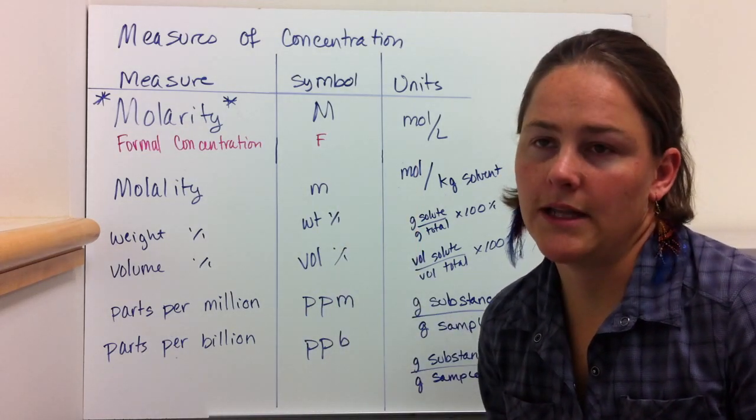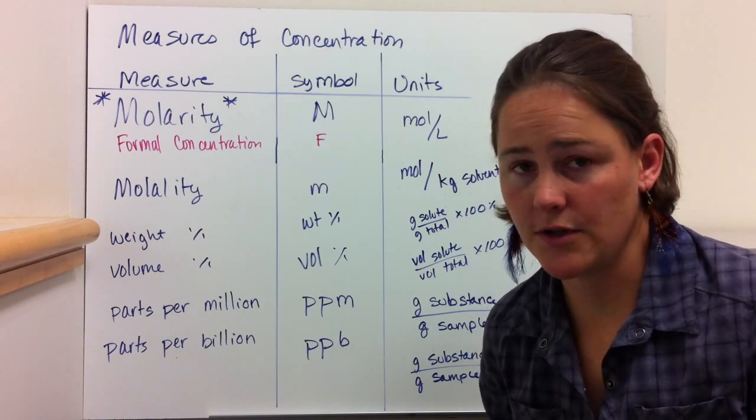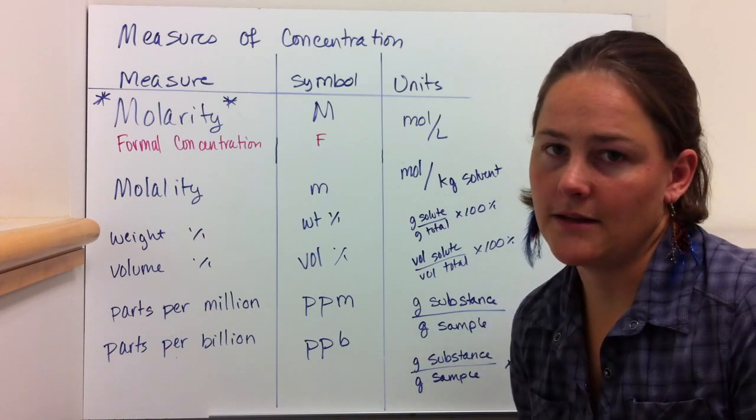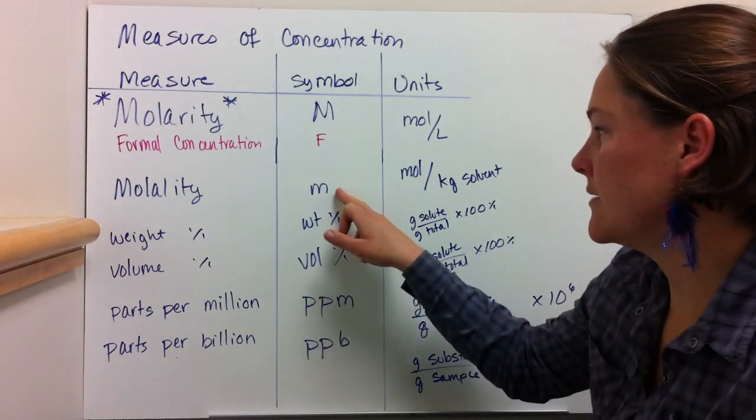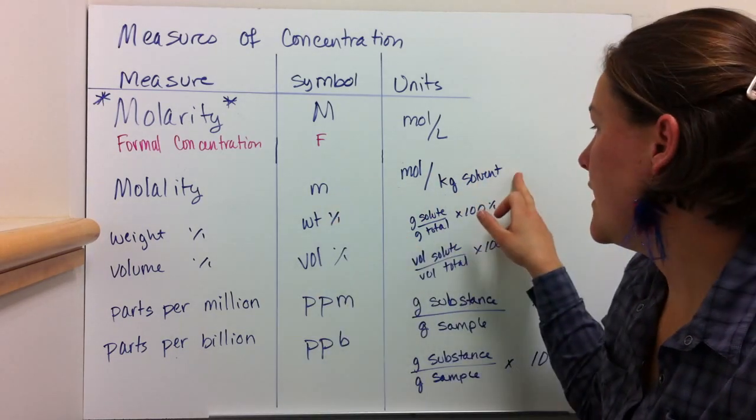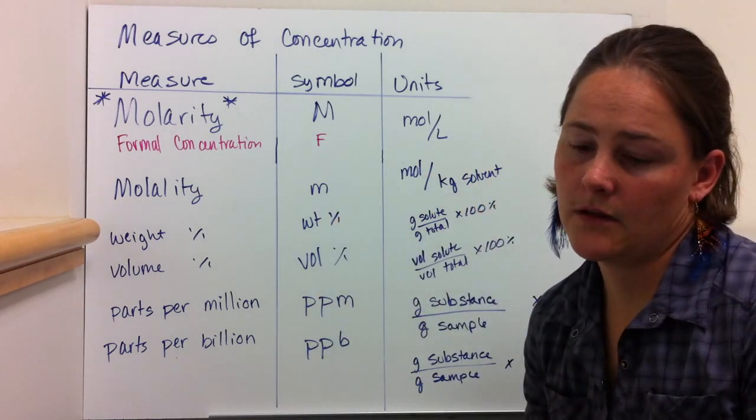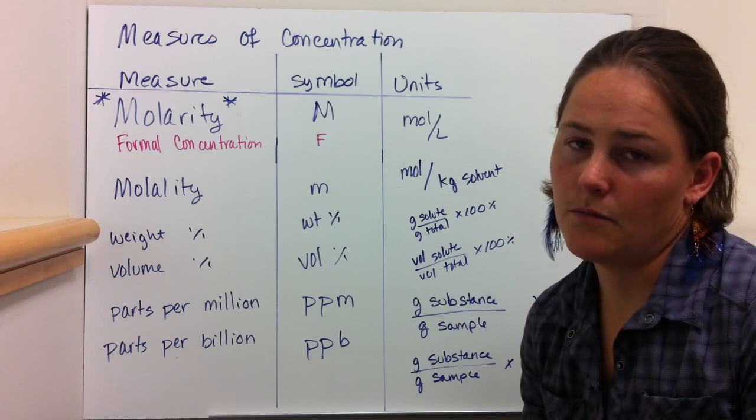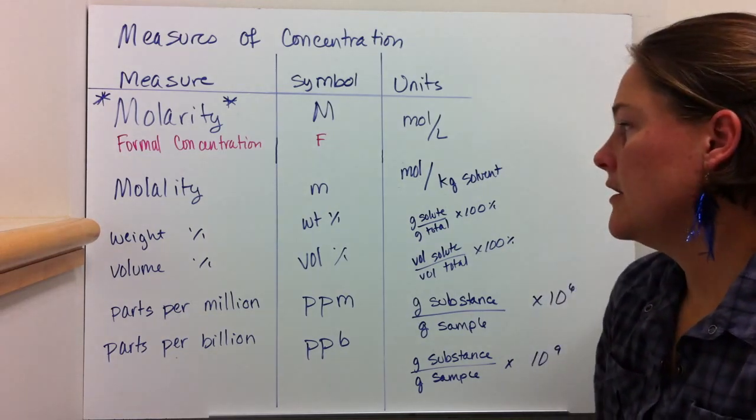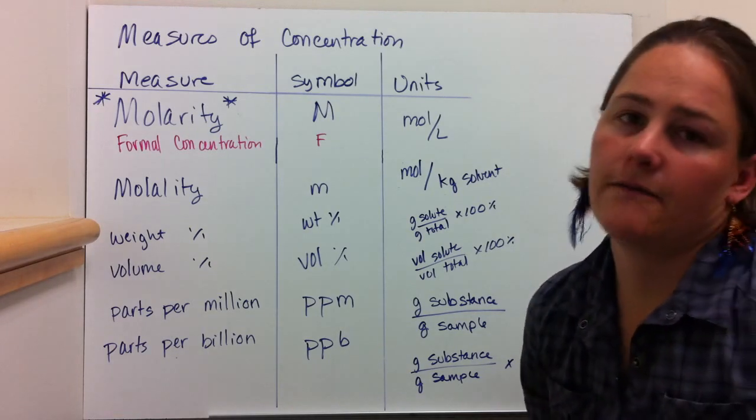Molality is actually independent of temperature, so that's why you might use that instead of something else. The symbol is a small m and the units are in moles per kilogram solvent.